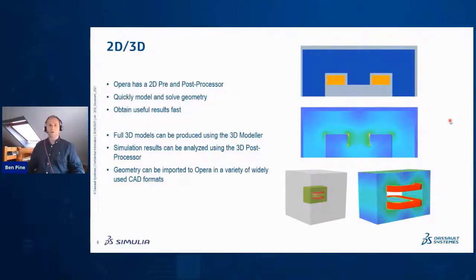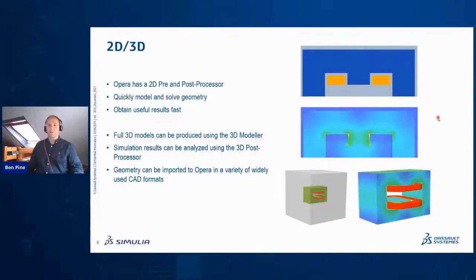In 2D there's a pre- and post-processor, so you can produce geometry like this — a half of an H-core dipole. You can quickly model and solve geometry and get results very quickly because it's two-dimensional. You can then take this model and extrude it to import into the 3D modeler.